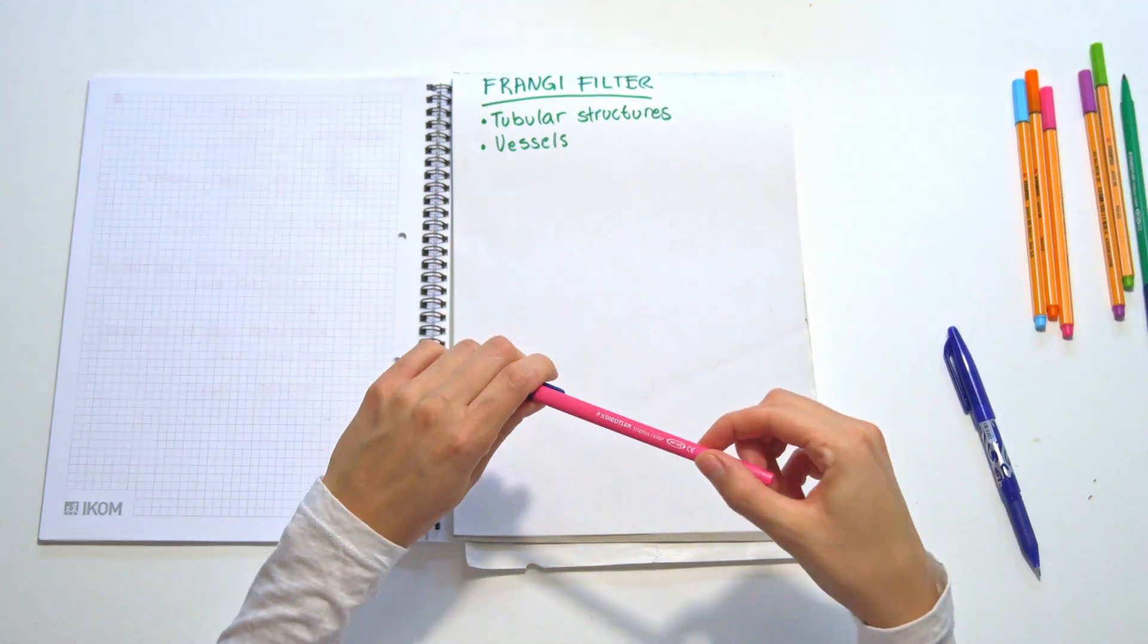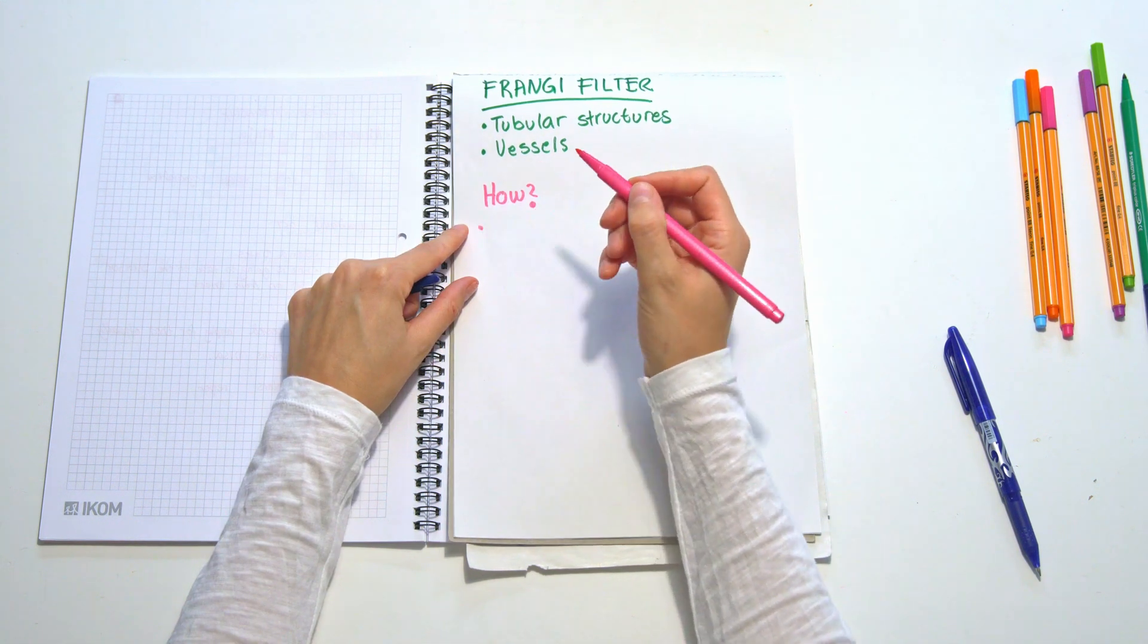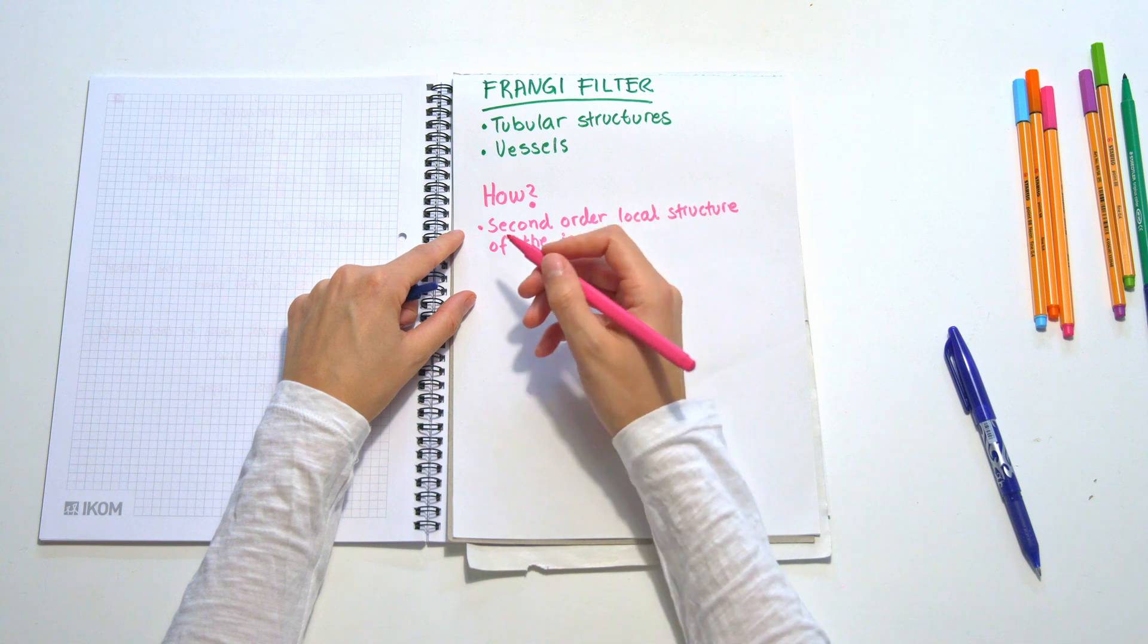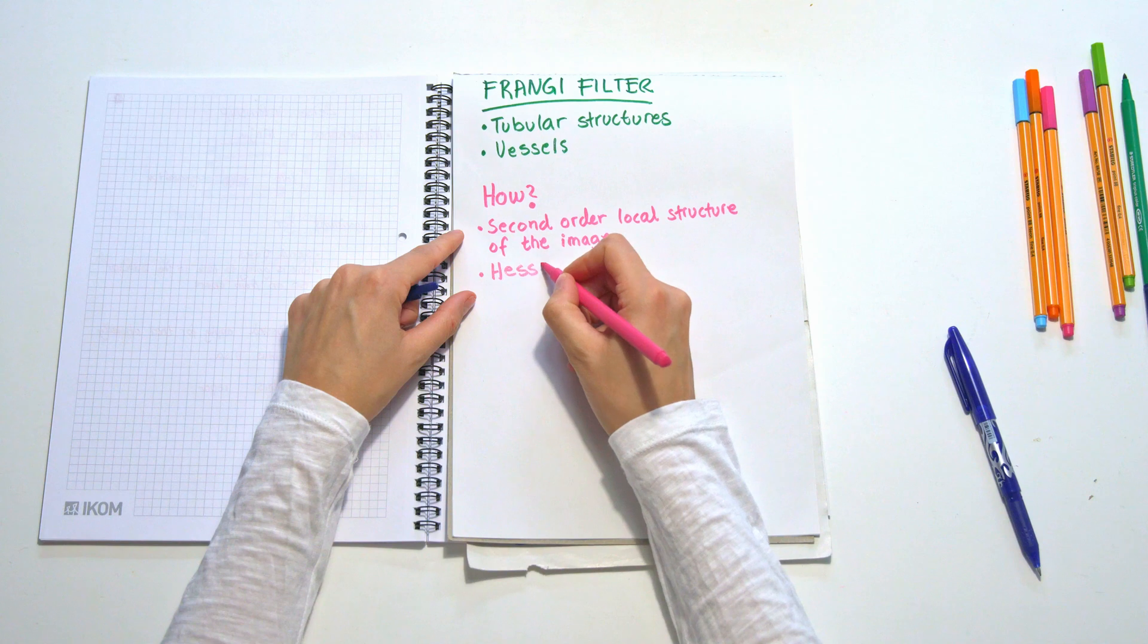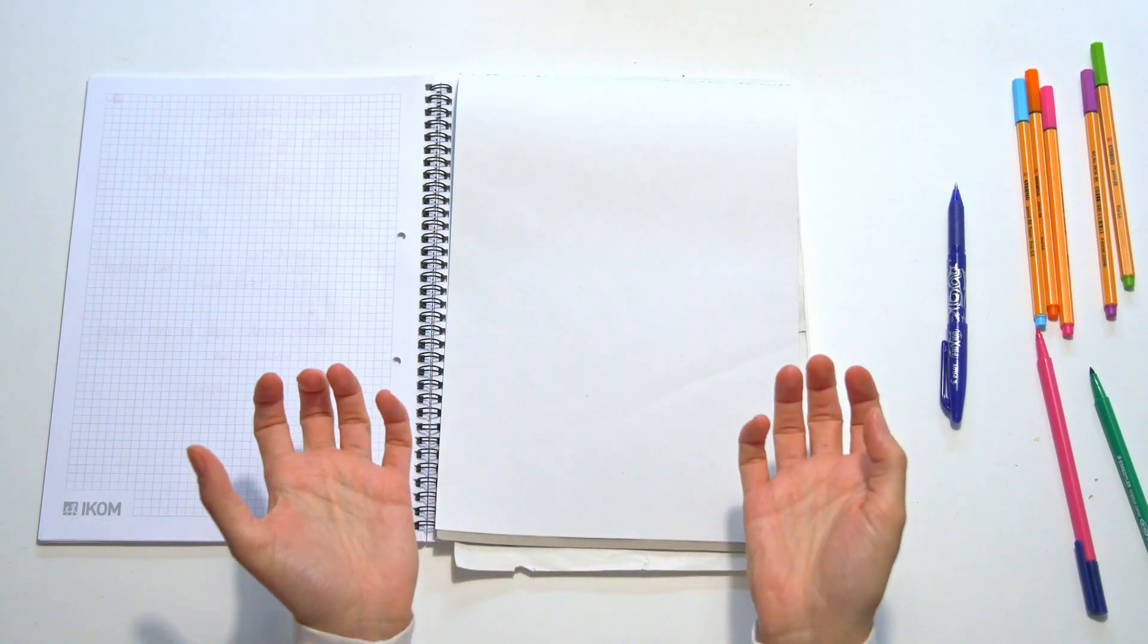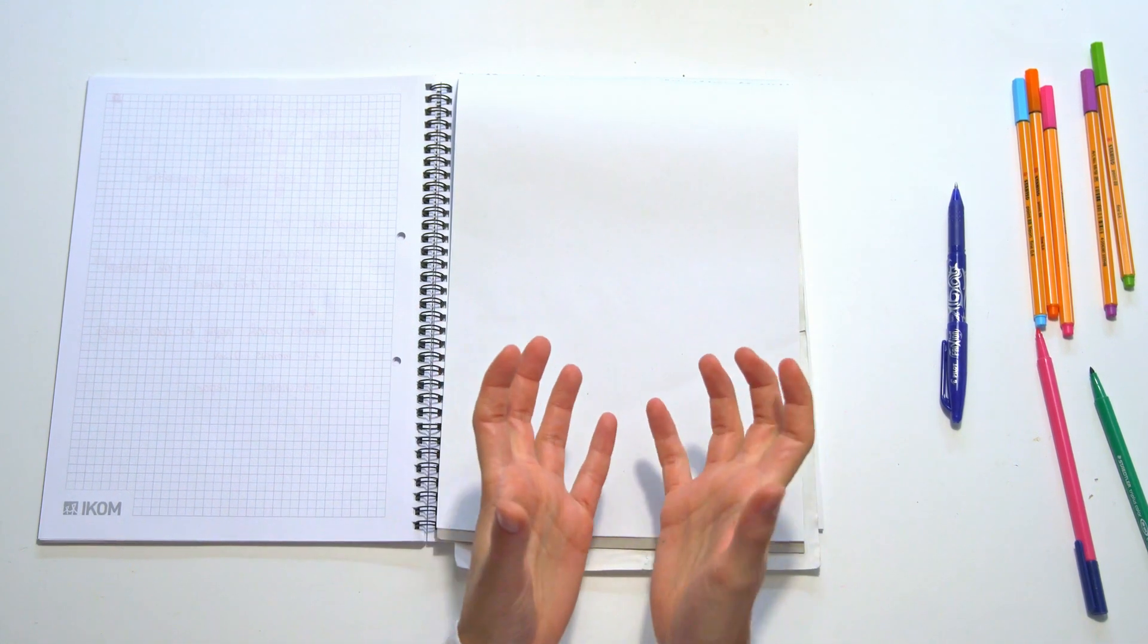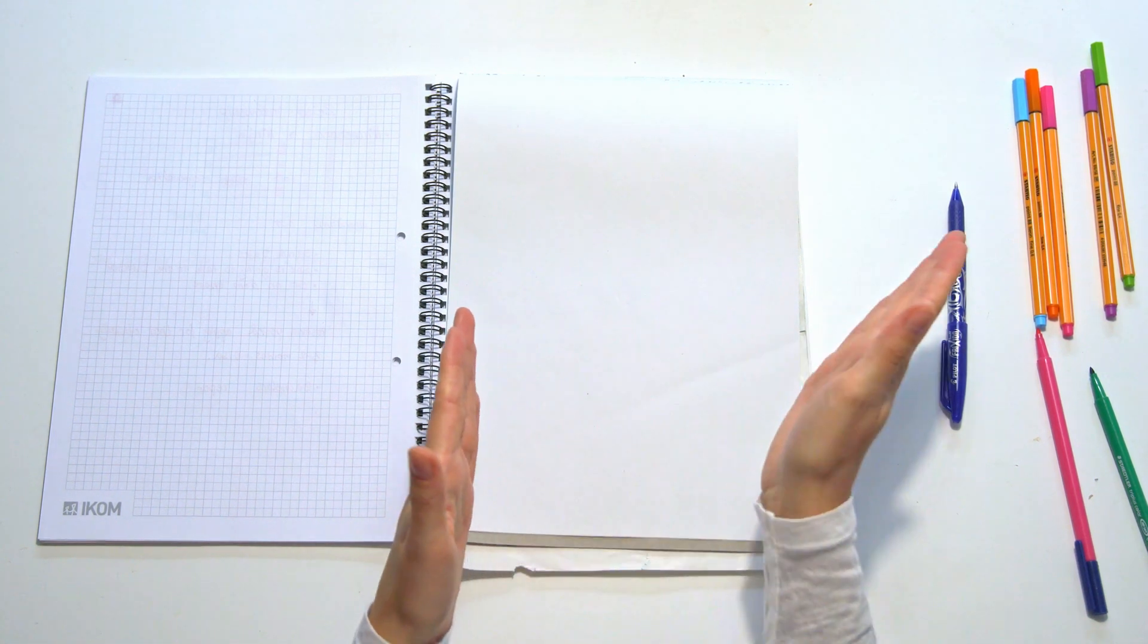So how do we do this? We look at the second order local structure of the image. That's why we will use a Hessian matrix for this. What is a Hessian matrix? It is the second partial derivative of the image function.